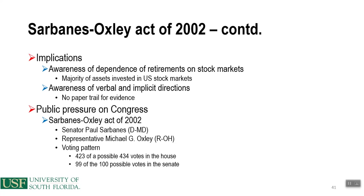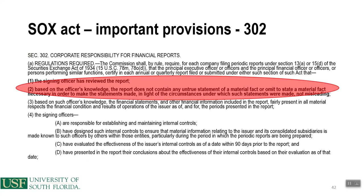Senator Paul Sarbanes led the effort, along with Representative Michael G. Oxley. The voting pattern was almost unanimous: 423 of possible 434 votes in the House and 99 of the 100 possible votes in the Senate. Key points within Sarbanes-Oxley include Section 302, where the signing officer certifies that, based on their knowledge, the report does not contain any untrue statement of a material fact or omit a material fact necessary to make the statements not misleading. Section 906 covers corporate responsibility for financial reports.